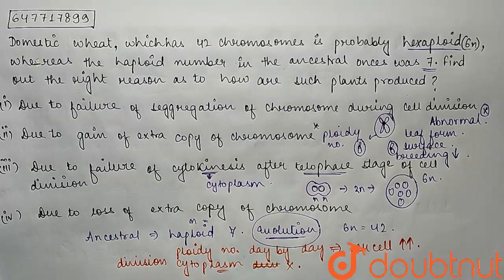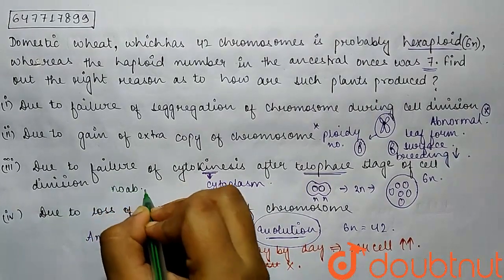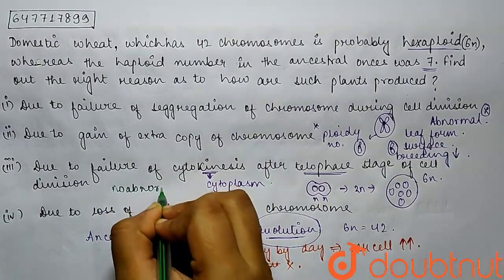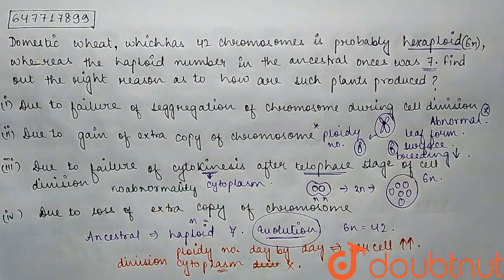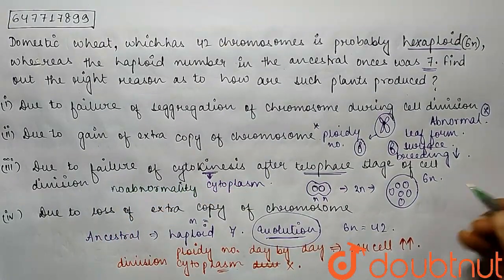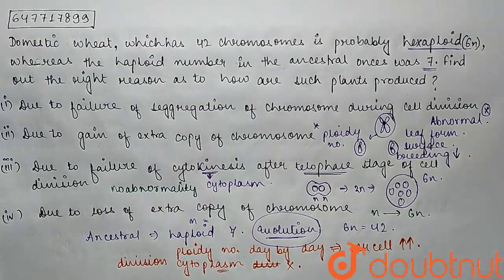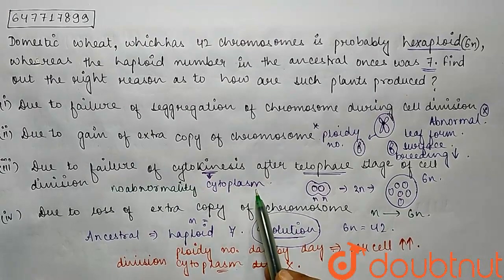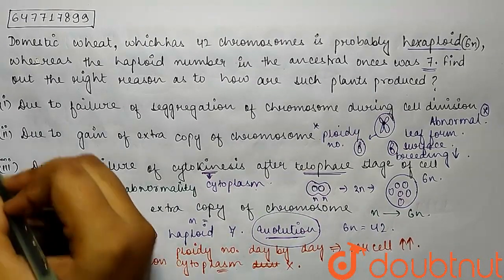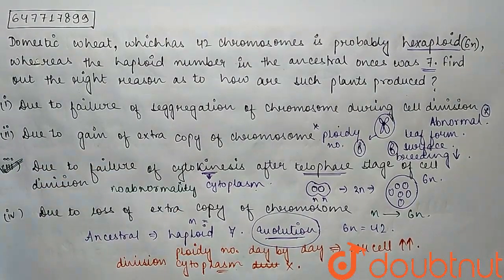In the ancestral line, there is no irregularity and no abnormality. According to this, we can say that the ancestors, through new divisions into a hexaploid condition, basically undergo failure of cytokinesis — failure of cytoplasm division. So this is the correct option: the third option. And we will tick it.